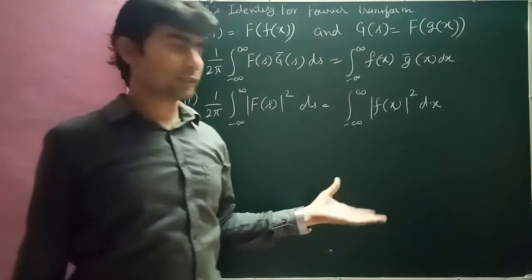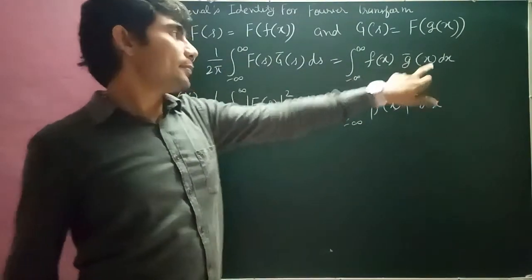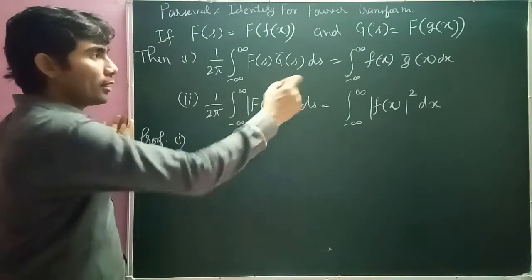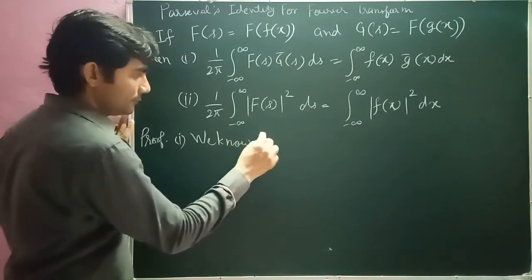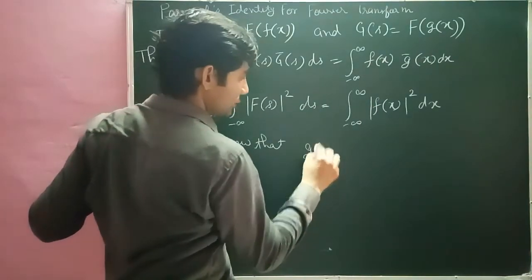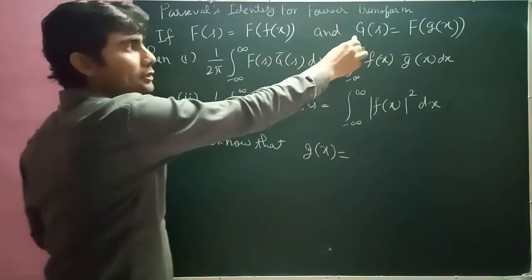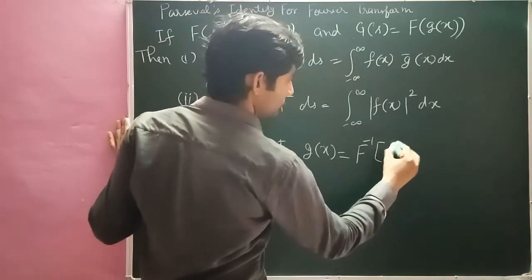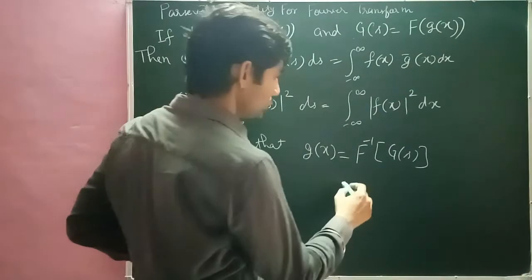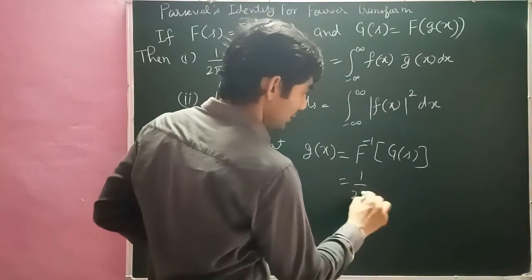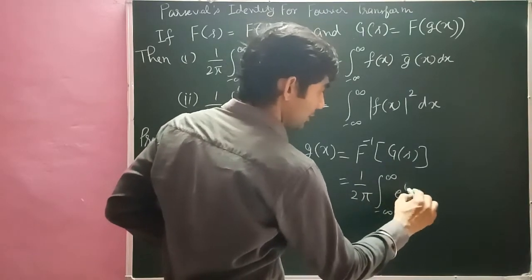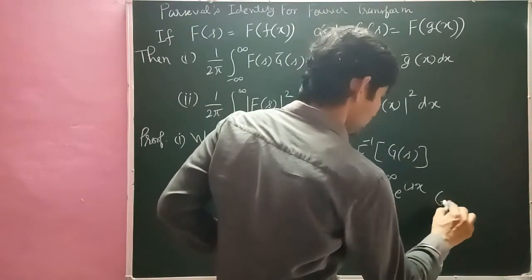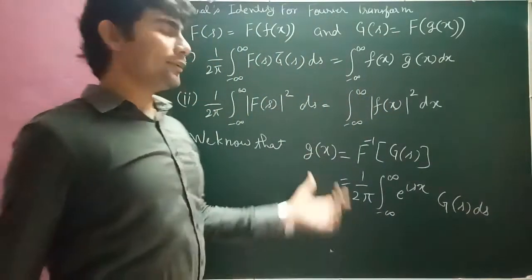Bar का मतलब है complex conjugate. तो G̅(x) कैसे निकालते हैं, पहले वही निकालते हैं। We know that G(x) की value — G(x) is the inverse Fourier transform of G(s), that is F⁻¹ of G(s). And by definition it is equal to (1/2π) integral from minus infinity to infinity of e^(isx) G(s) ds. यह definition है G(x) की।